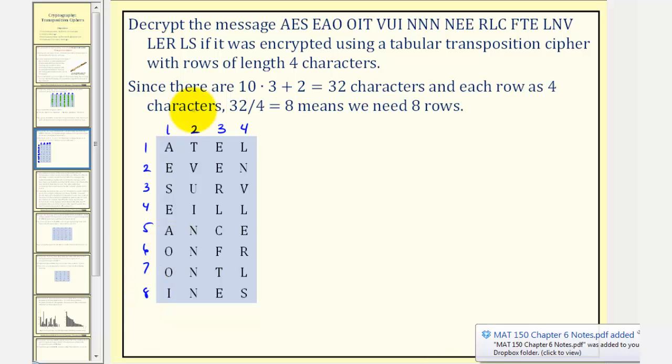So when decrypting a message using this method, it is important to always find out how many rows we have. And now because this was formed by getting the characters off in columns, we'll write these down in column one, two, three, and four.